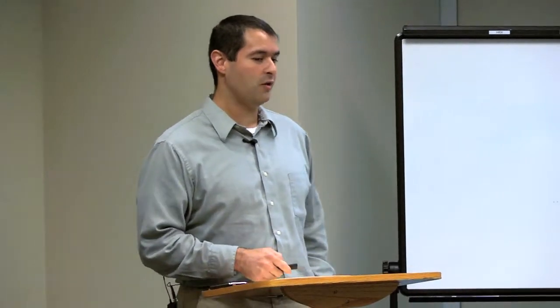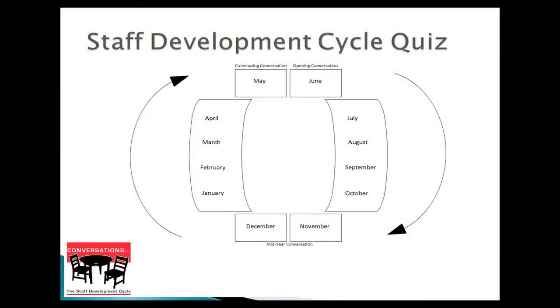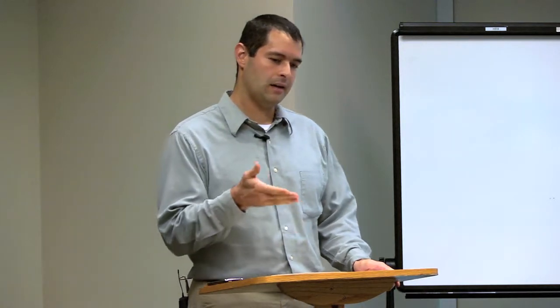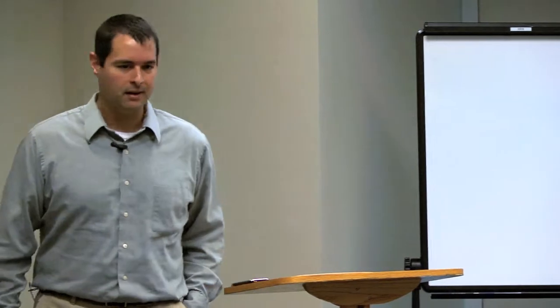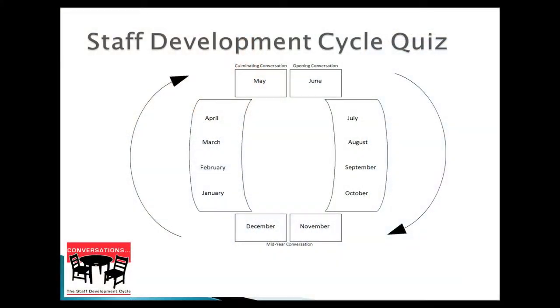Theoretically the staff development cycle is supposed to start in June, because May 31st is the date when all your final reviews are done for the previous year. You set goals in June for the next year. June through October, then November-December is the mid-year conversation — roughly between Thanksgiving and Christmas is the ideal time. If you have a lot of people you oversee, you may need to start a few weeks before Thanksgiving or spill into the new year.